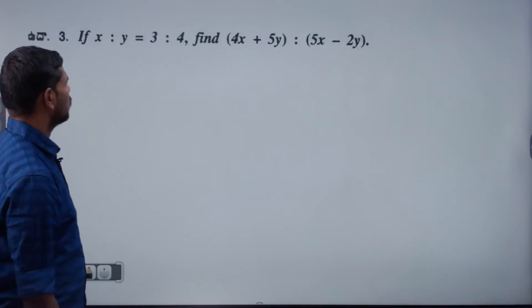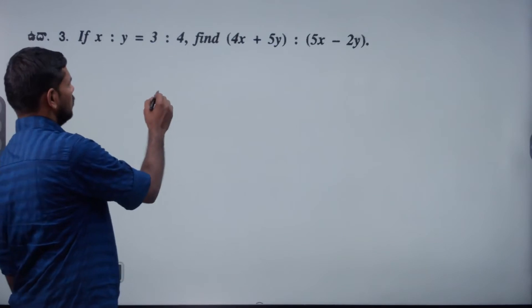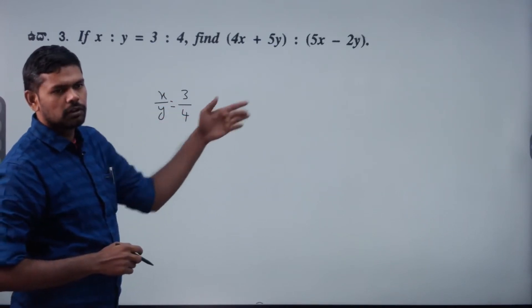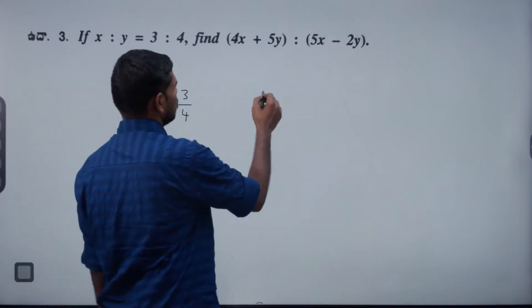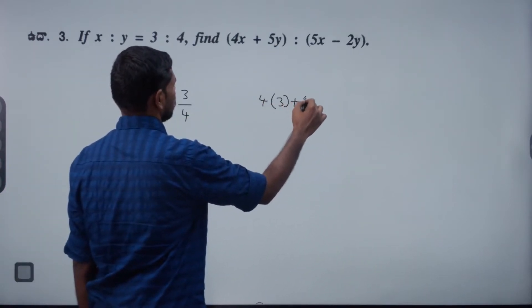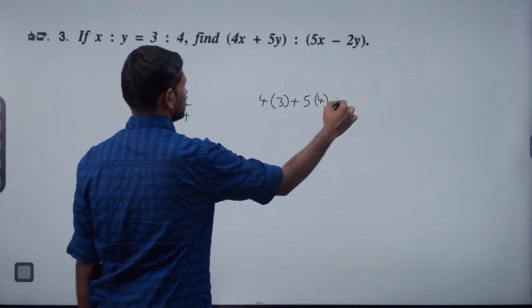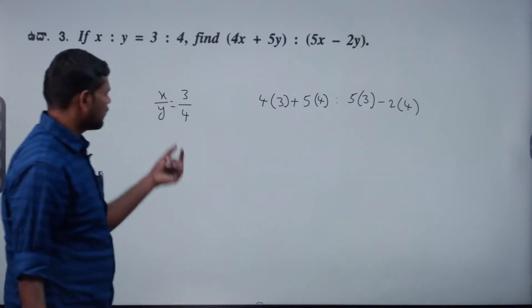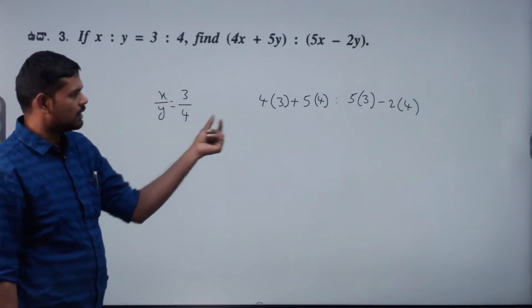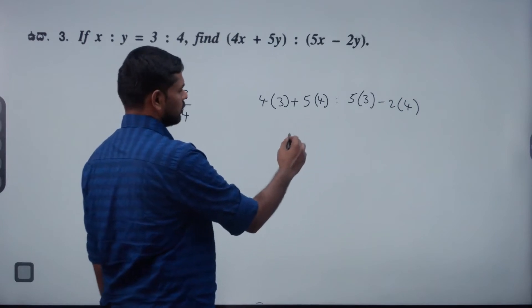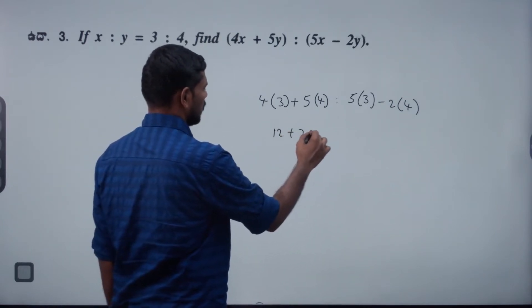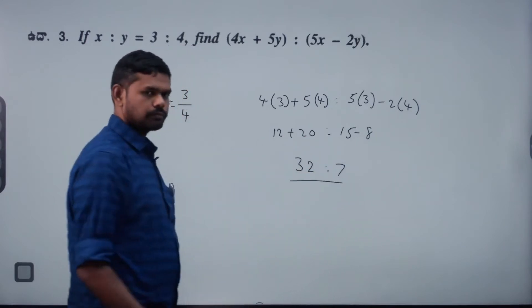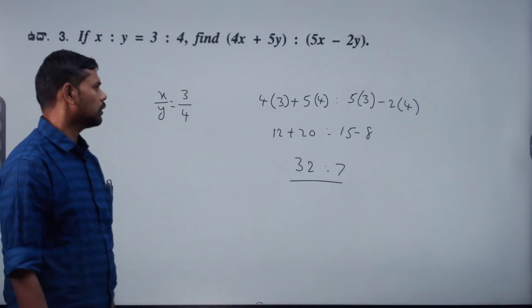X is to Y equal to 3 is to 4. Then what is the value? X by Y equals 3 by 4, so X value is 3 and Y value is 4. Substituting: 4 into 3 plus Y value 4 gives 5 into 4 is to 5 into 3 minus 2 into 4. That is 12 plus 20 is to 15 minus 8. So 32 is to 7.